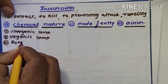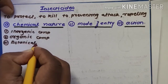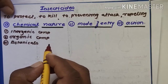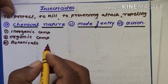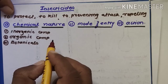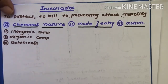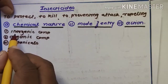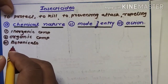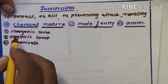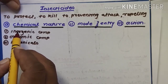The third subclass under chemical nature is botanicals — for example, nicotine, rotenone, and pyrethrin. These are the important examples of botanical insecticides. So the three subclasses under chemical nature are inorganic compounds, organic compounds, and botanical compounds.